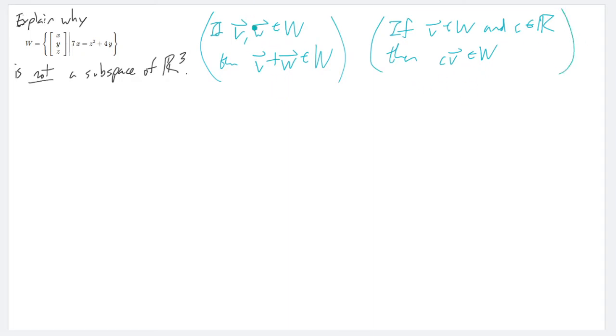I either need to pick two vectors that belong to W and show their sum is not in W, or pick a vector in W and a real number where the multiple is not in W. I like picking real numbers more than picking vectors, so I often try to break this property with scalar multiplication. I'm going to work over here and try this one.